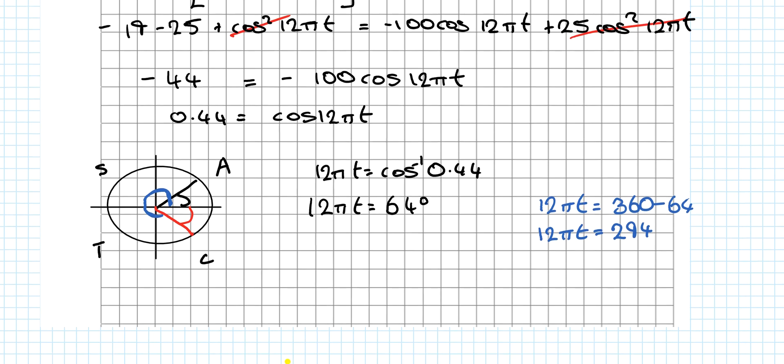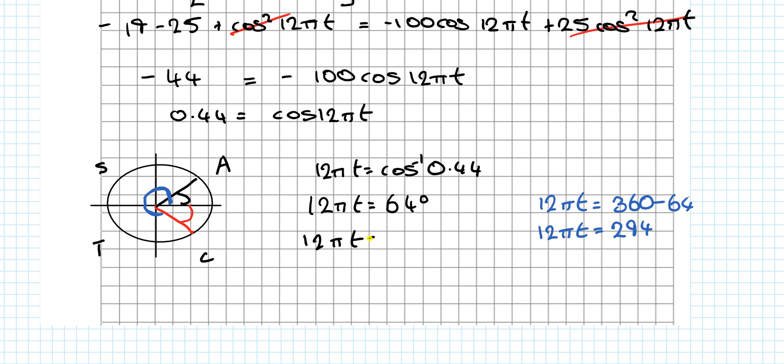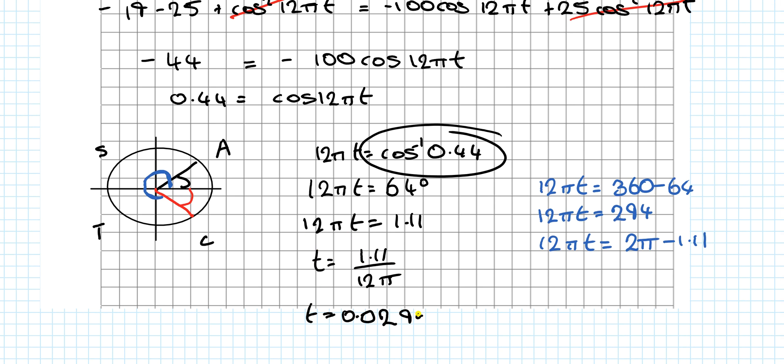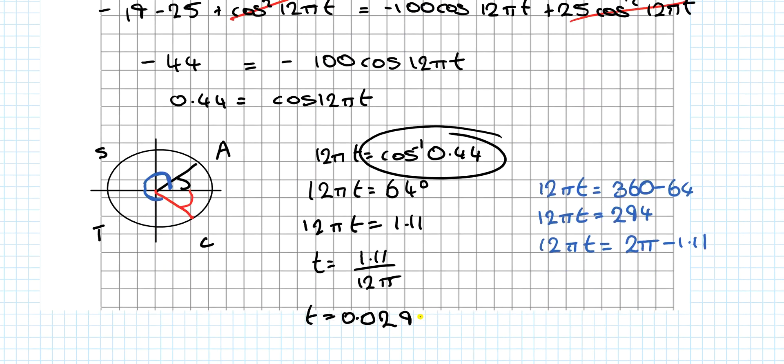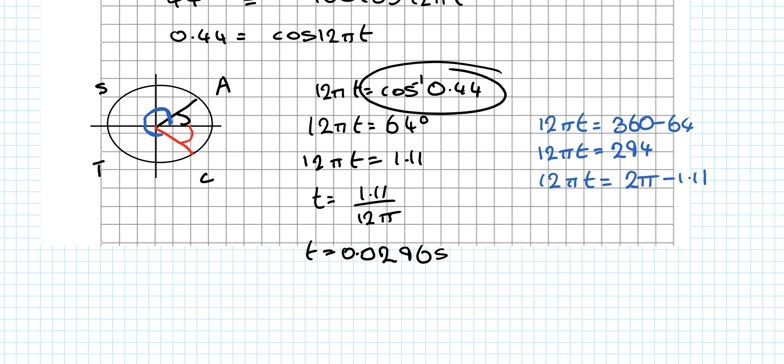And I've just realized why am I not using radians? I should be using radians because π is in the question. So I'm just going to change that 12πt. I'm just going to type that into the calculator again. Radians cos inverse 0.44 is 1.11. And this would be 12πt equals 2π minus 1.11. And then divide everything by 12π. So it's 1.11 divided by 12π, t equals 0.0295. I'll give you an answer correct to four decimal places. So that's 9.06 seconds I think it is.